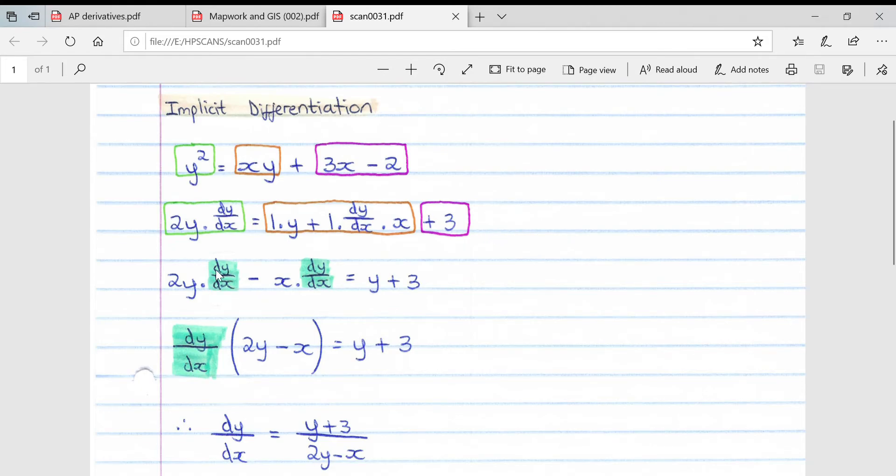Then what we do—I've tried to color code it—we take all our terms with dy over dx to the left hand side of the equal sign, and every other term to the right hand side of the equal sign, regardless of whether they're x or y terms.